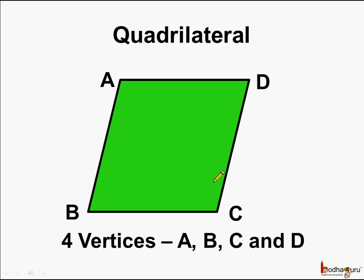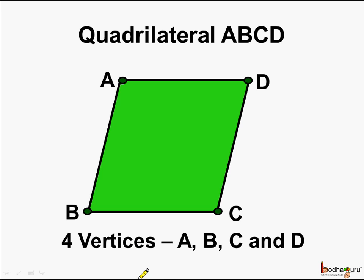So this is a quadrilateral and it has four vertices: vertex A, vertex B, vertex C and vertex D. Since the vertices are named as A, B, C, D, this quadrilateral is called quadrilateral ABCD.